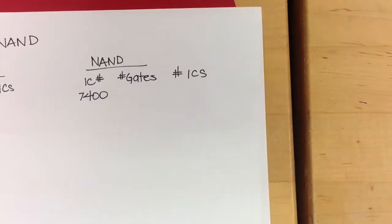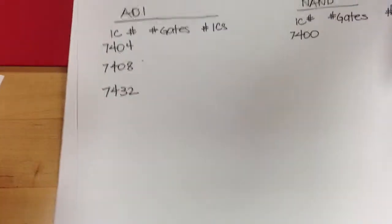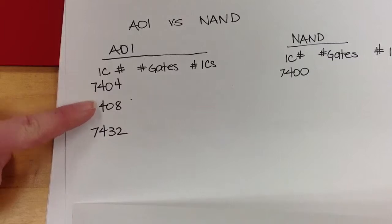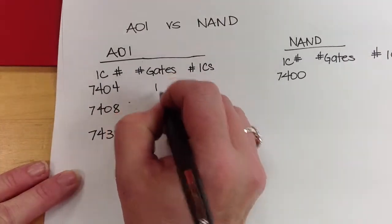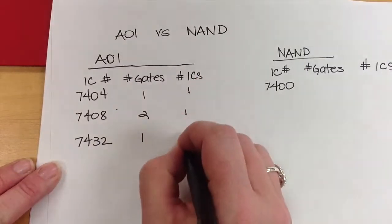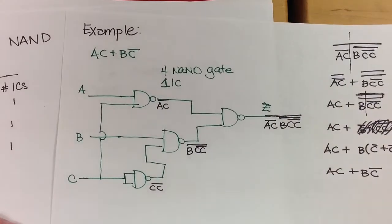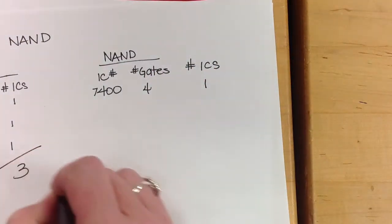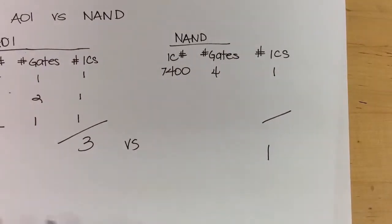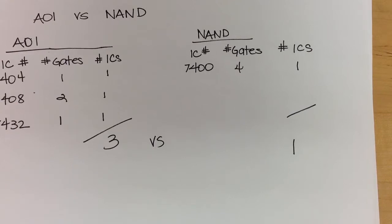Let's compare the two circuits. The AOI circuit used part numbers 7404, 7408, and 7432 — one IC each — for a total of three ICs. With the simplified NAND-only version using the 7400, we have four NAND gates, and since there are four NAND gates on a standard dual-input IC, that's just one IC. So we go from three ICs down to one — a pretty substantial savings in number of parts, not just variety of inventory.